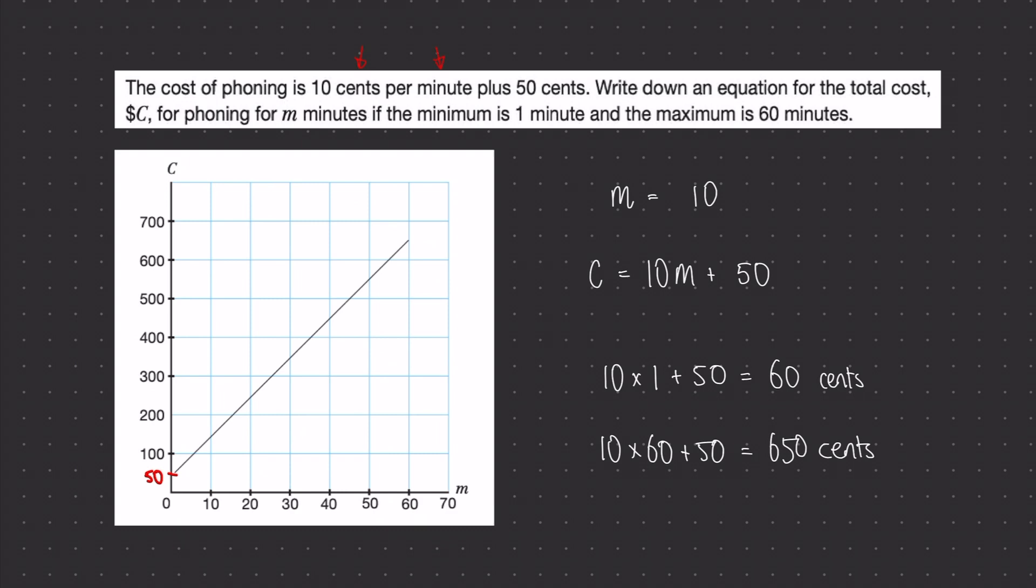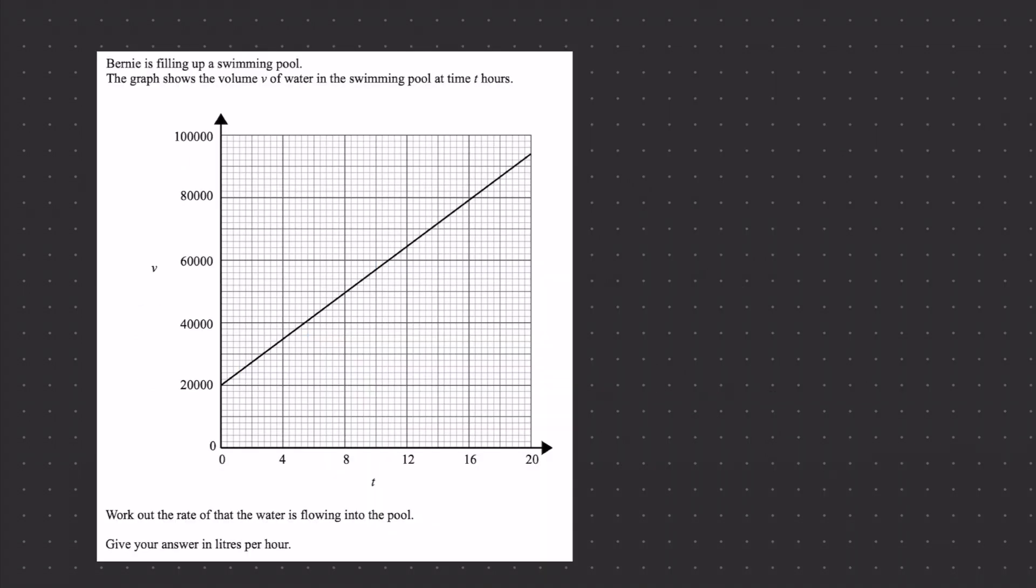So here we're going to have a look at a past paper question. Bernie is filling up a swimming pool and we have a graph that shows the volume of water in the swimming pool on the y-axis and the time it takes to fill the swimming pool up on the x-axis. The question is work out the rate that the water is flowing into the pool.